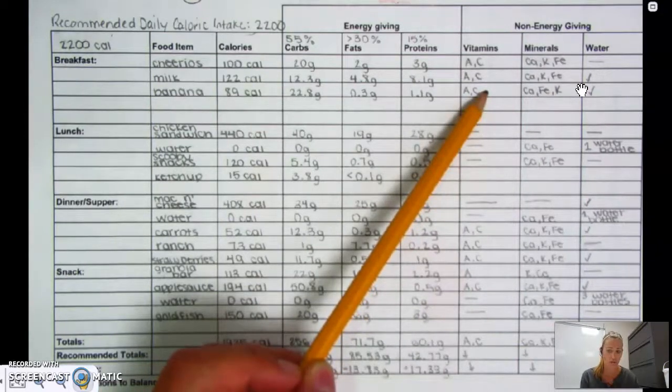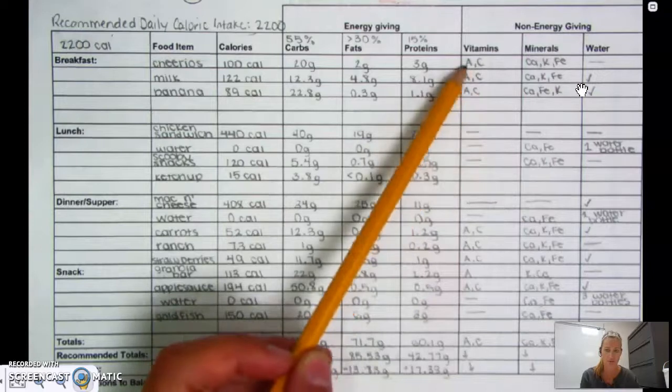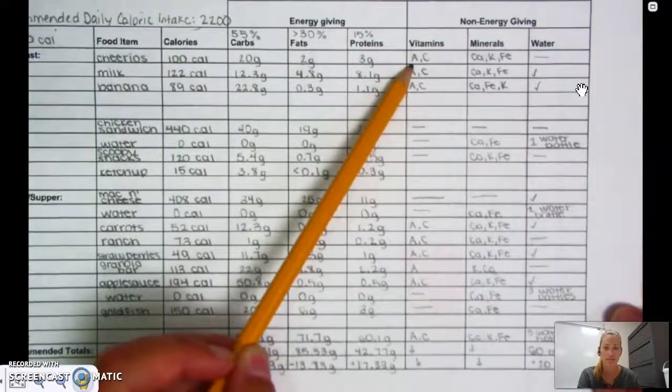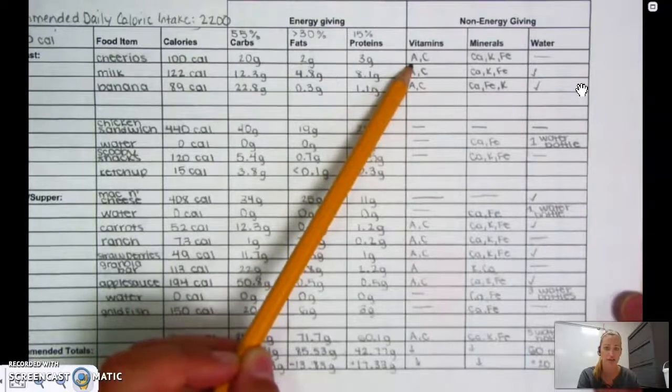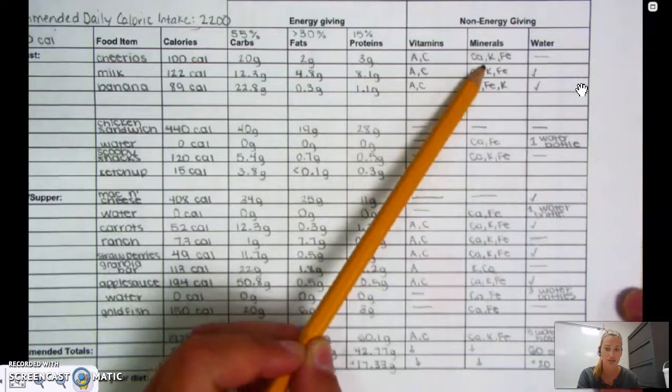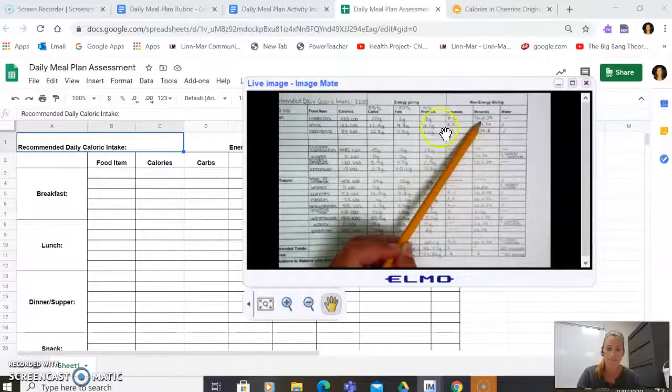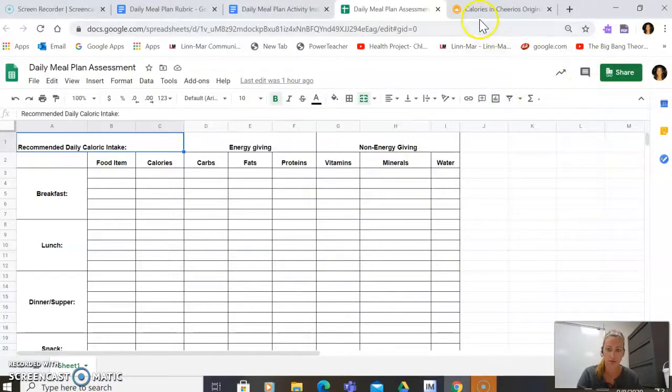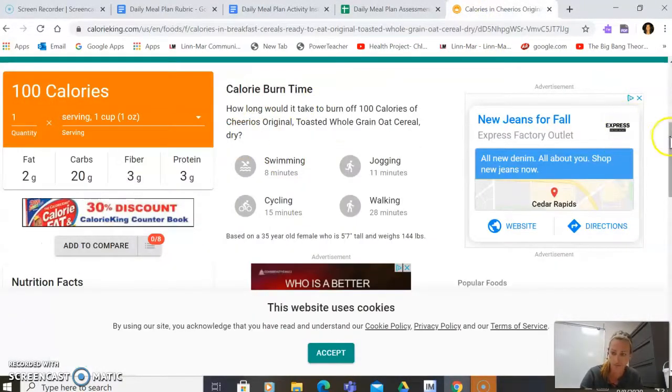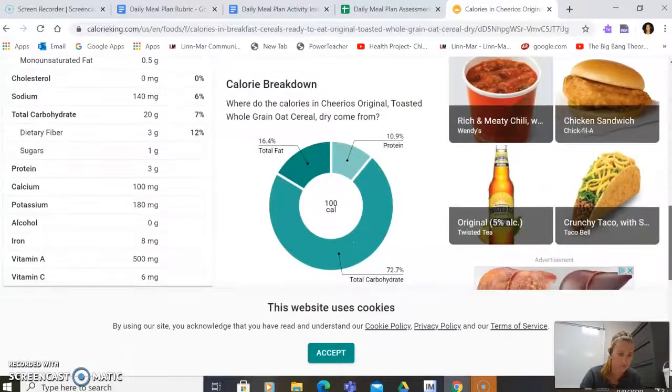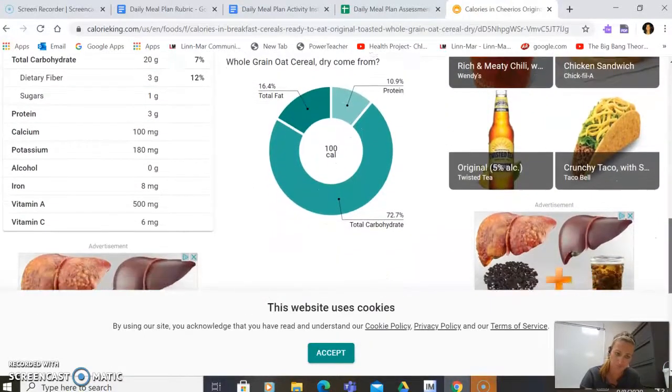So you can see here that she has written for her non-energy giving nutrients, she has vitamins A and C. She also has minerals, calcium. I'm going back here to look at the rest of them. Potassium and iron.